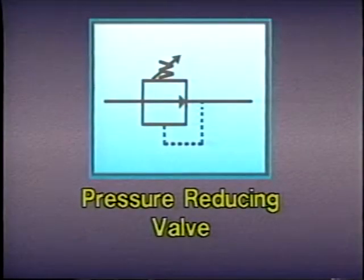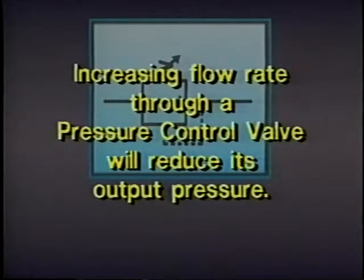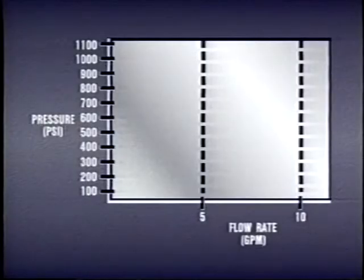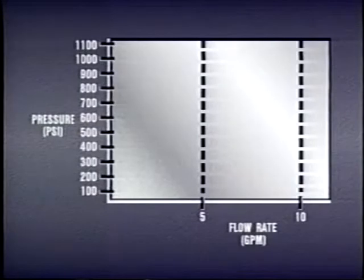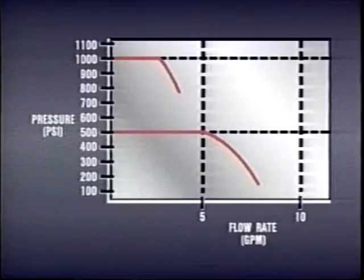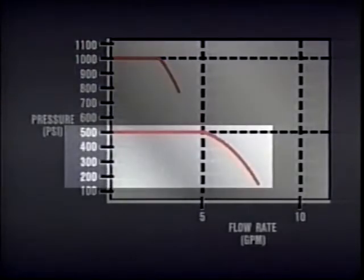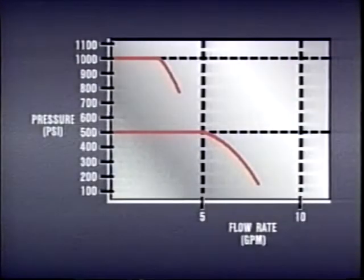Flow rate affects the performance of a pressure reducing valve. For example, if a valve is set to reduce pressure from 1,000 psi to 800 psi at a certain flow rate, increasing the flow rate will reduce the pressure even further below 800 psi. This decrease in pressure in a pressure reducing valve is called droop. Droop increases as flow rate increases, and is also more pronounced at higher pressure settings — notice how much more droop occurs at 1,000 psi than at 500 psi. Pressure reducing valves may have to be adjusted if flow or pressure change.